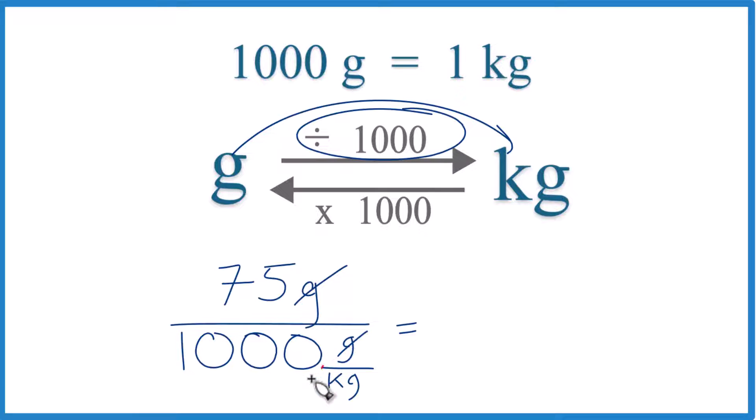So let's move the decimal place, 1, 2, 3. So that gives us one. And then up here the same, 1, 2, 3. Then put a zero as our placeholder. So we end up with 0.075 kilograms, because kilograms are the units we have left.